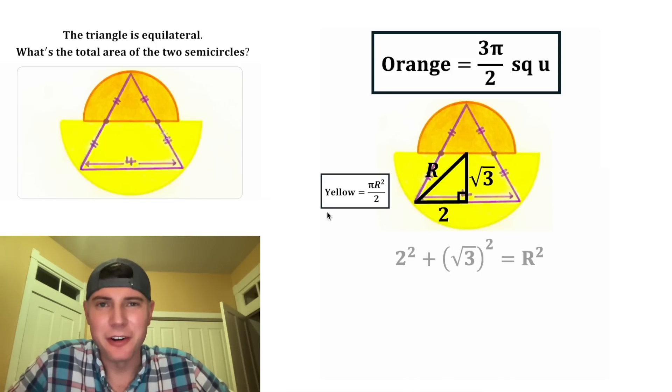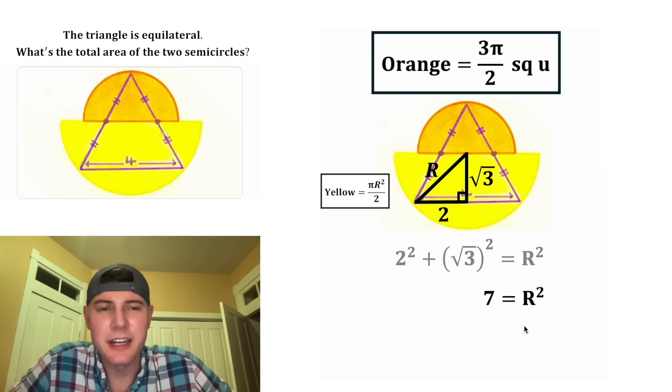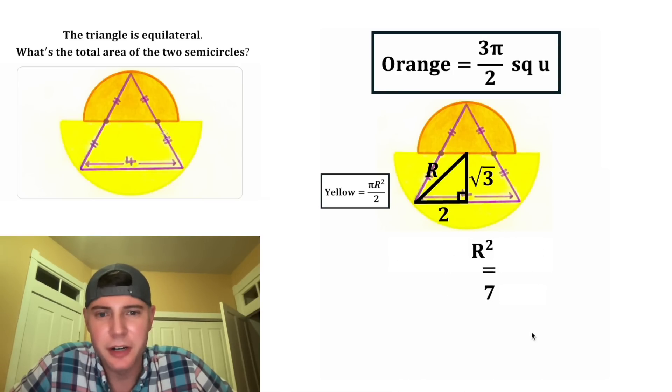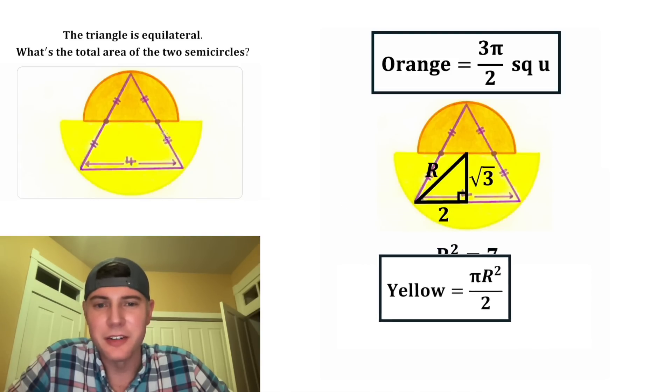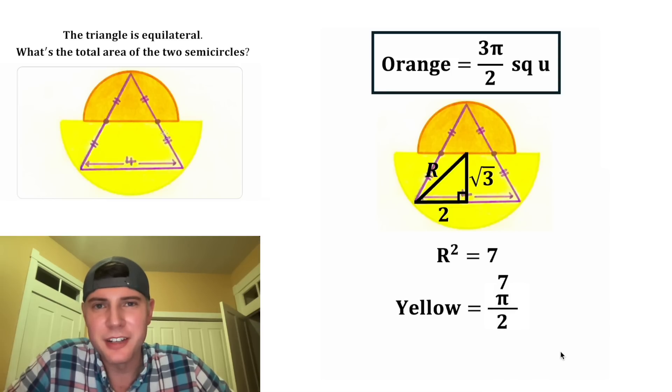Now we're ready to do Pythagorean theorem again. We have 2² + (√3)² = R². Two squared is 4, root three squared is 3. Four plus three is 7. We have the value of R². R² is all we need to find the yellow area. In place of R², let's plug in 7. The yellow area equals 7π/2 square units. This is important, let's put a box around it.